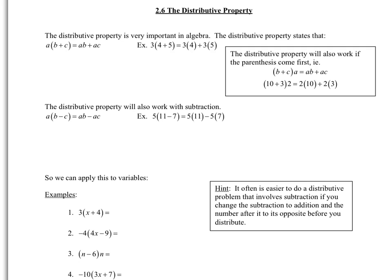The distributive property states that if you have an expression like a times the sum of b plus c, you can get the same answer if you take a times each of those numbers inside the parentheses — you can do a times b plus a times c.